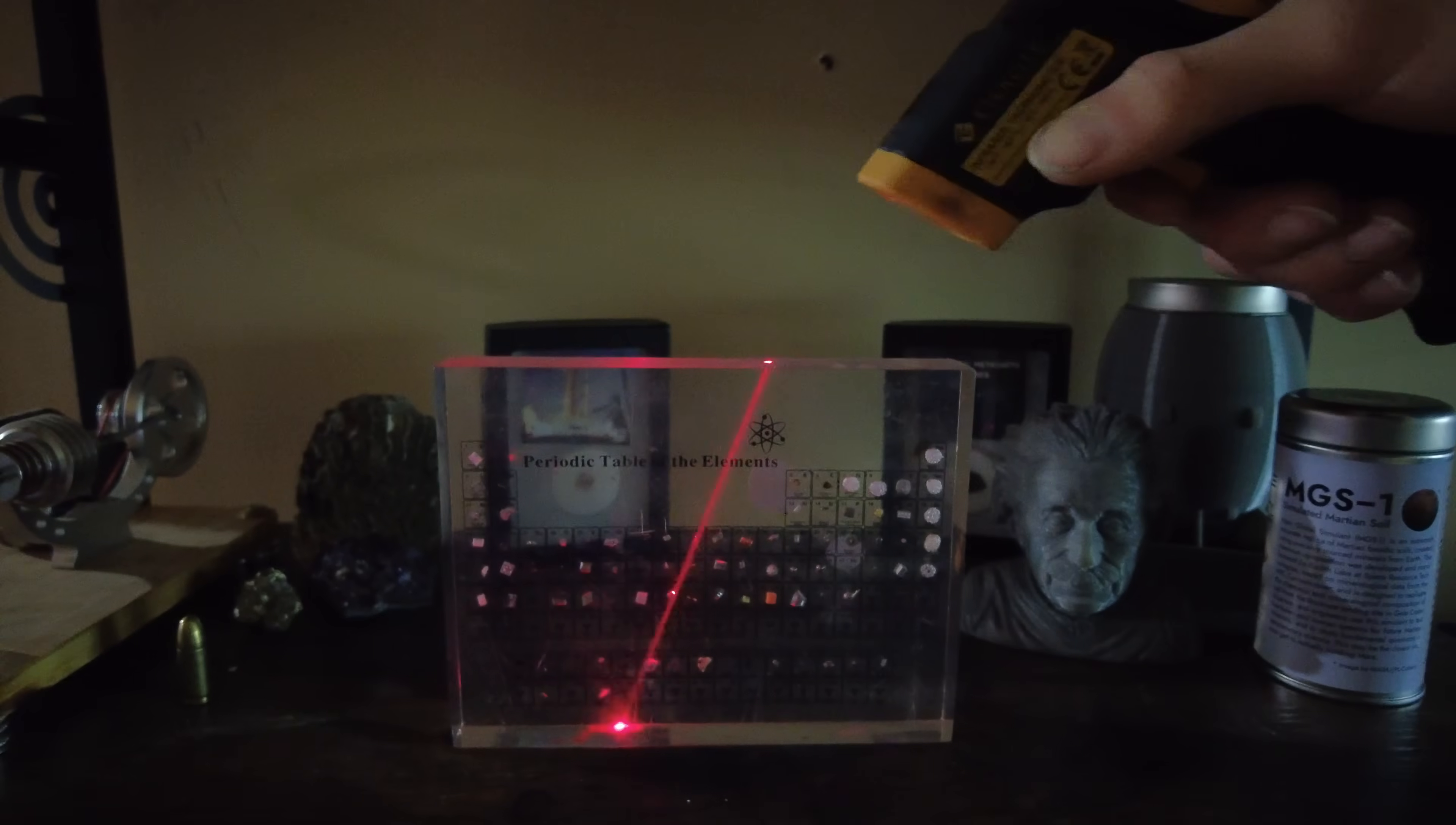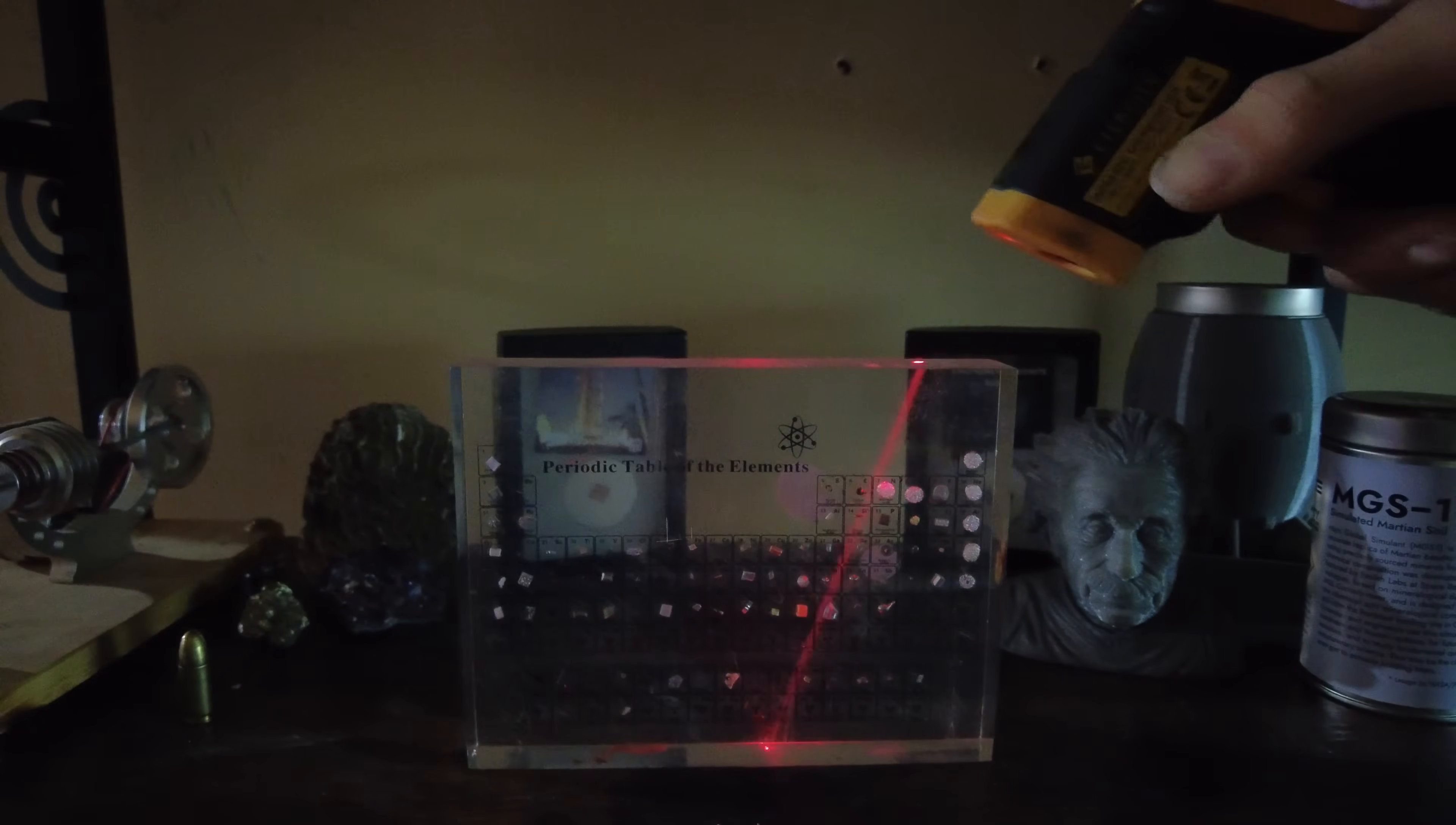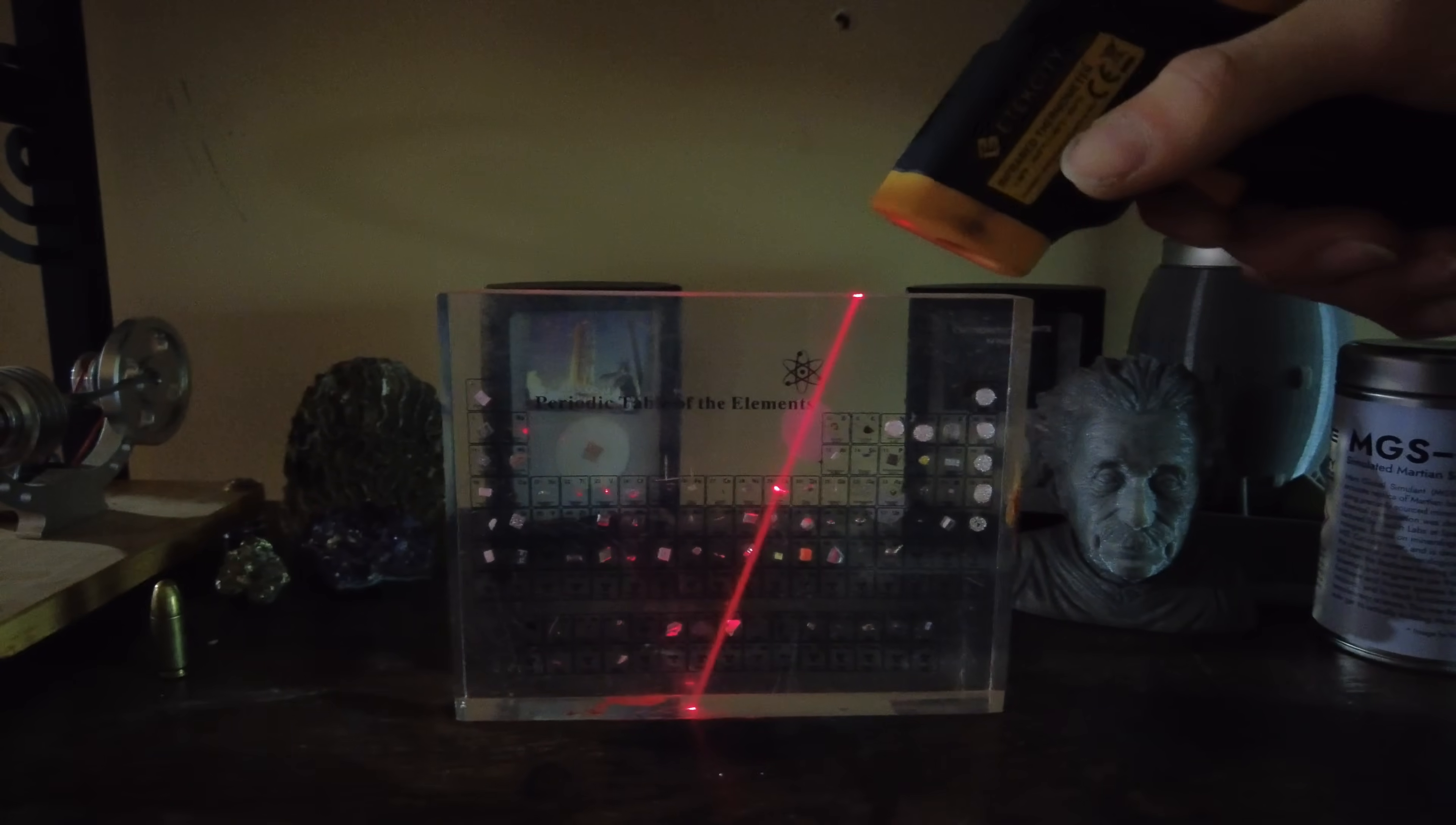But not only does light appear to change speed as it moves through the glass, it also seems to change direction. As you may know, this is called refraction. And while I've explained that this process doesn't involve individual photons bouncing or changing direction, the overall wave front of light does clearly change direction here. What I haven't fully explained yet is why this change in direction occurs.